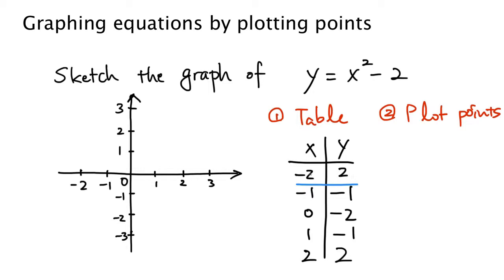So negative 2 comma 2. Negative 2, x is negative 2, y is 2, the point is right here. And then we look at the next pair of x, y values. Now x is negative 1 and y is negative 1, the point is right here.